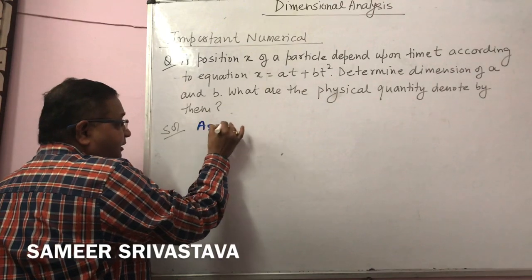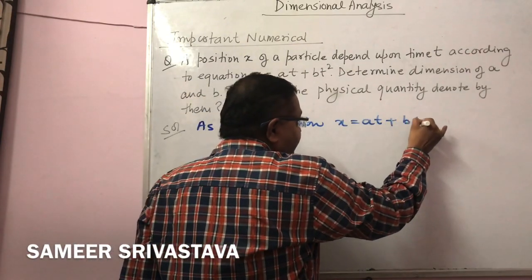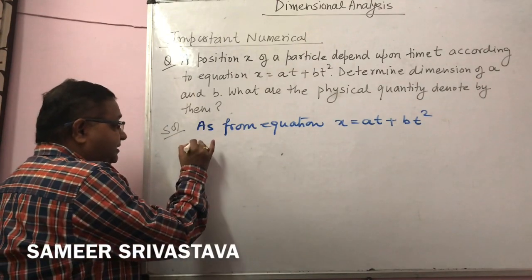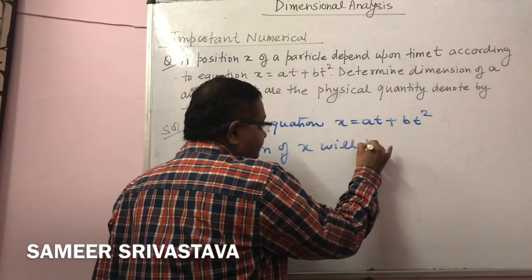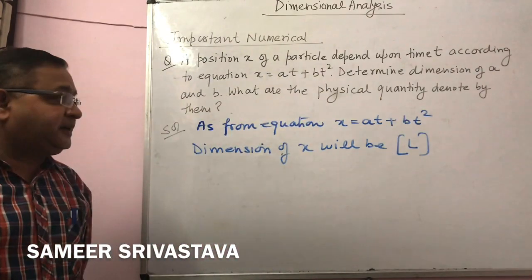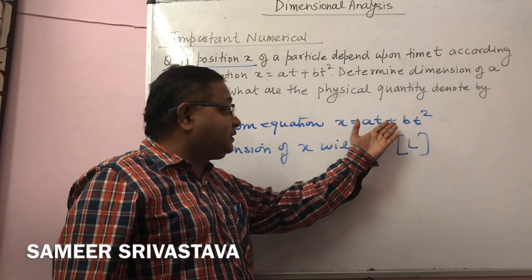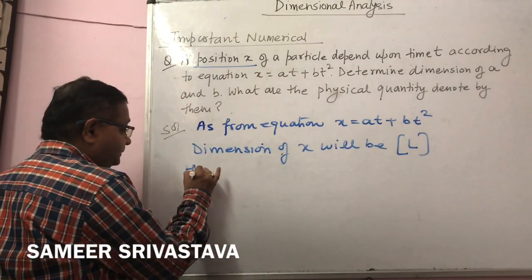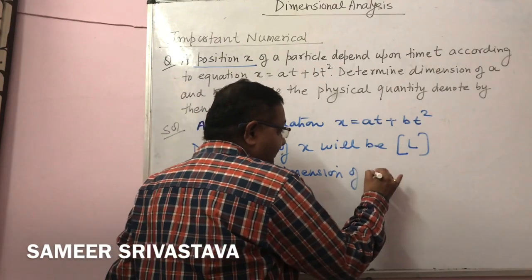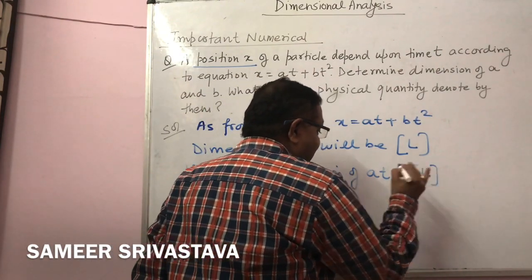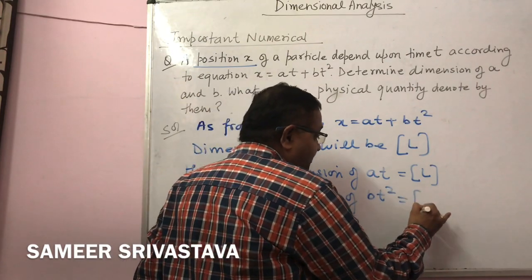From the equation x = at + bt², the dimension of x is L. Since the left-hand side is length, the right-hand side must also be length. Hence, the dimension of at is also L, and the dimension of bt² is also L.